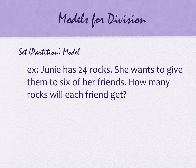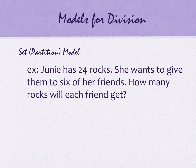We're going to do it again with Junie and her friends. Still has 24 rocks, wants to give them to six of her friends — how many rocks will each friend get? This one involves two set models: the set partition model, which we'll do first, and then there's a variation. I mention the variation because it lends itself well to what happens when we start looking at division with fractions, which comes up in proportional and statistical reasoning. The variation lends itself better than the partition model for that.